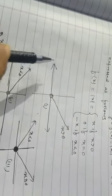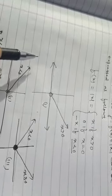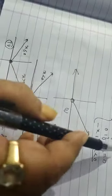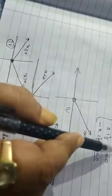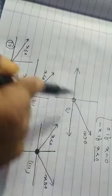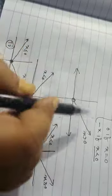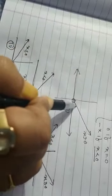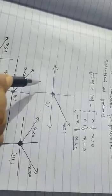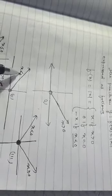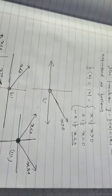Now the question is how do you draw the graph? We have already drawn the graph of the identity function. In the identity function y is equal to x. But here, mod x means y is equal to x when x is greater than 0, which means when it is positive. When x is 0, it is 0. This will be the graph for x greater than 0, and this will be the graph for x less than 0.